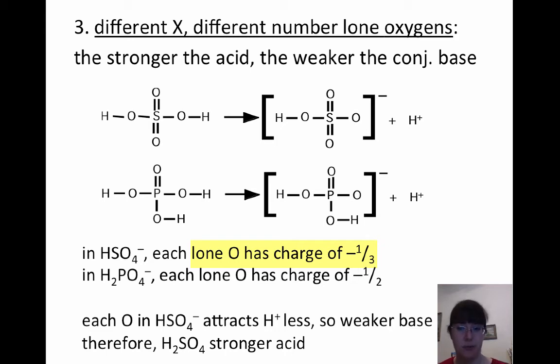In the other example, in our phosphoric example, with phosphorus, each lone oxygen, there's two of them sharing a negative one charge. So each one of those is going to have a negative one half charge.